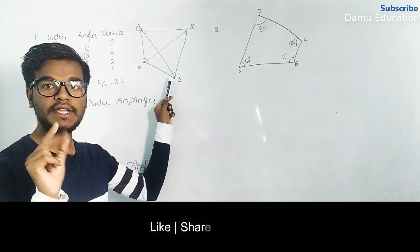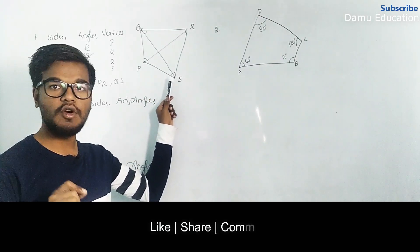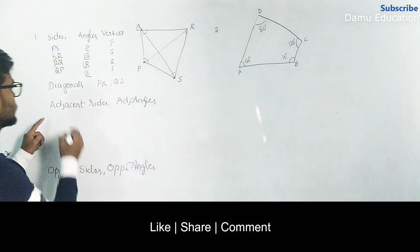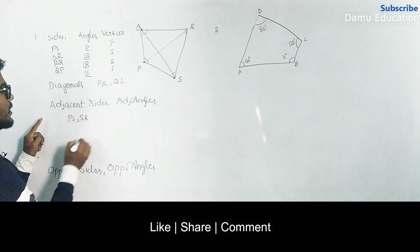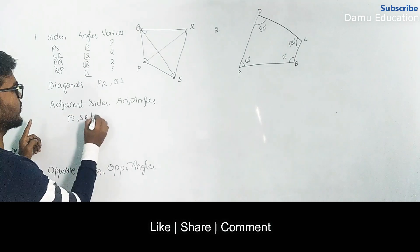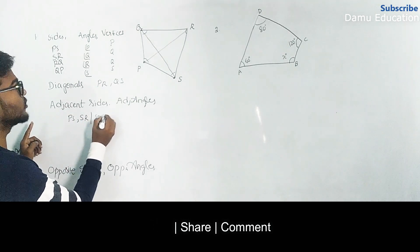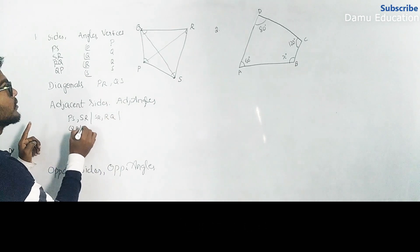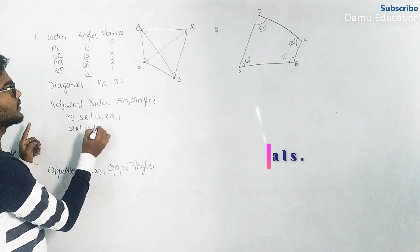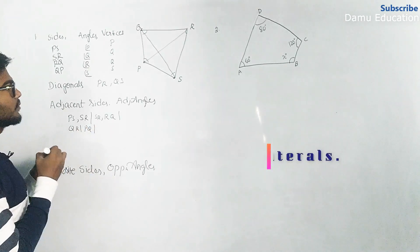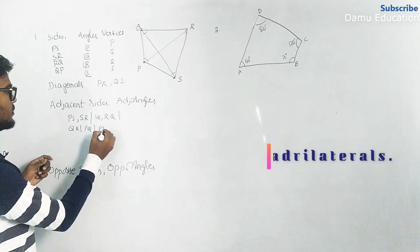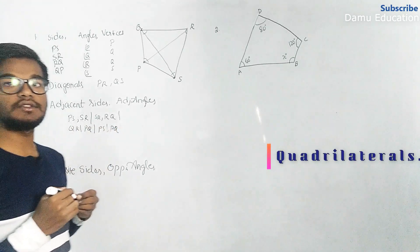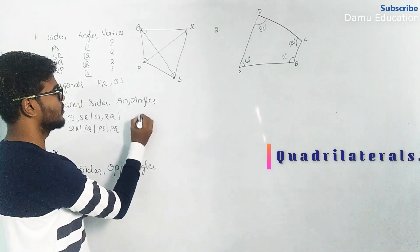Adjacent sides means that for any two sides, one vertex will be common — those two sides are called adjacent sides. So PS and SR are adjacent sides, SR and RQ are adjacent sides, RQ and QP are adjacent sides, and QP and PS are adjacent sides.